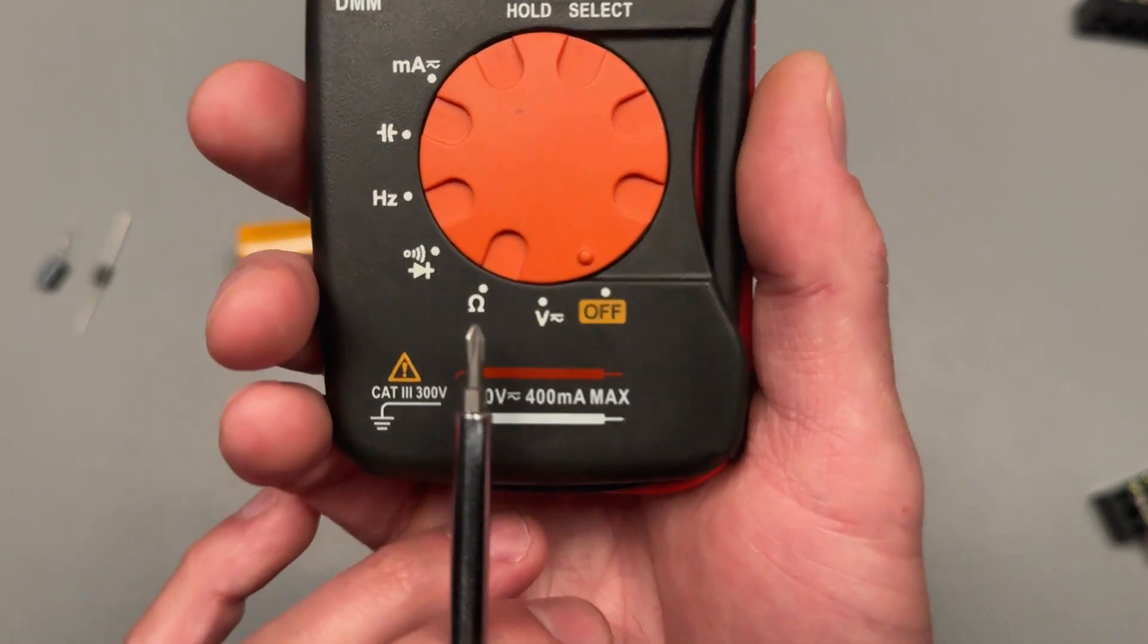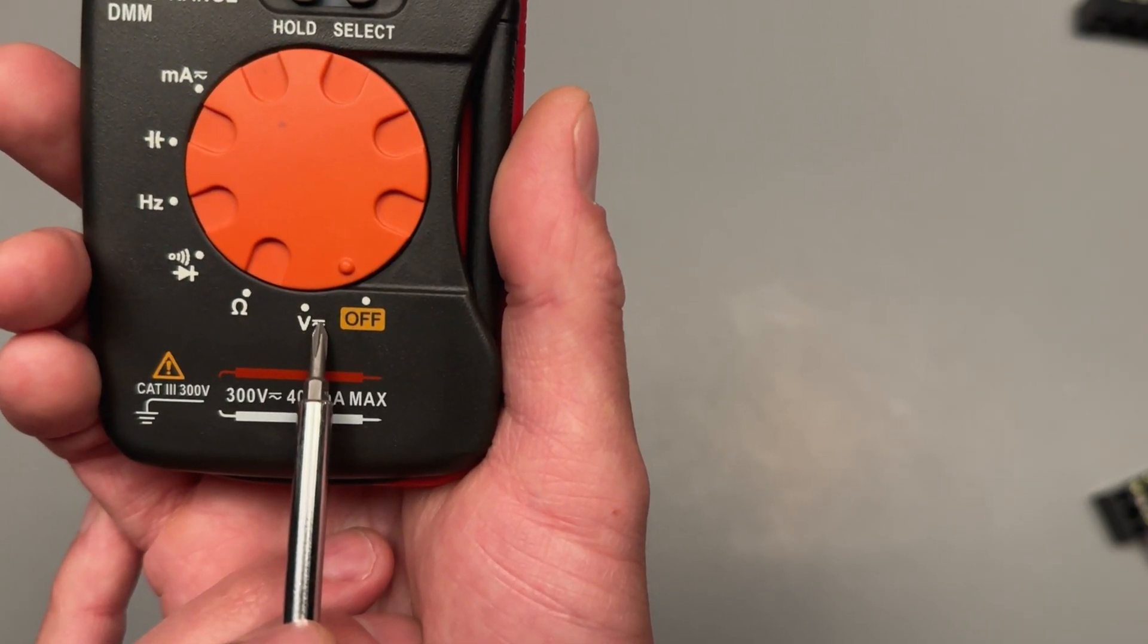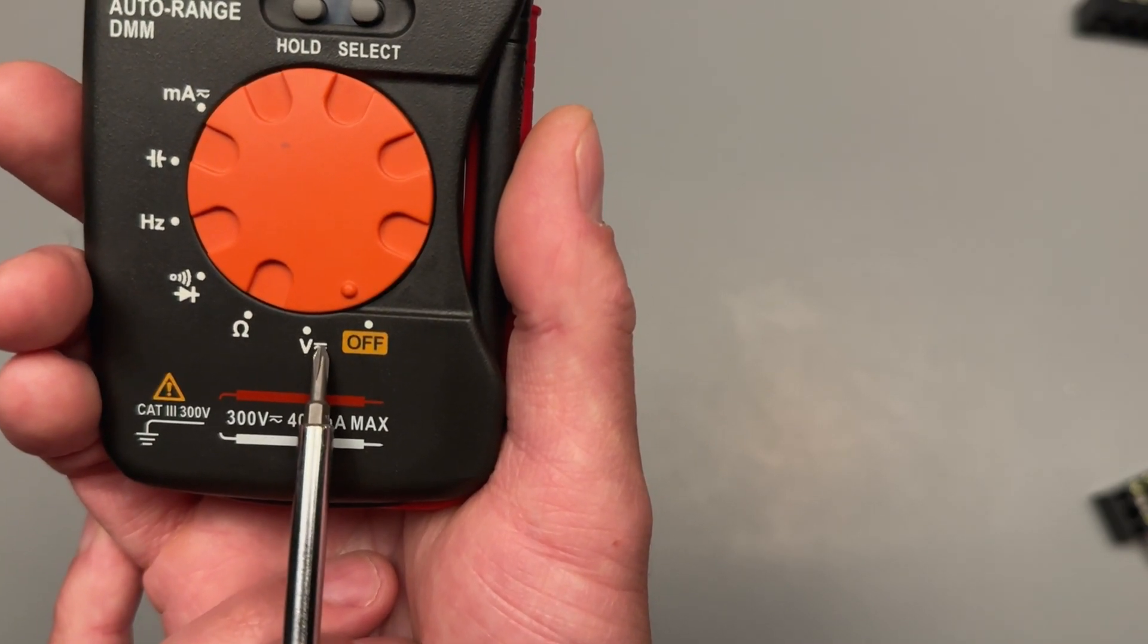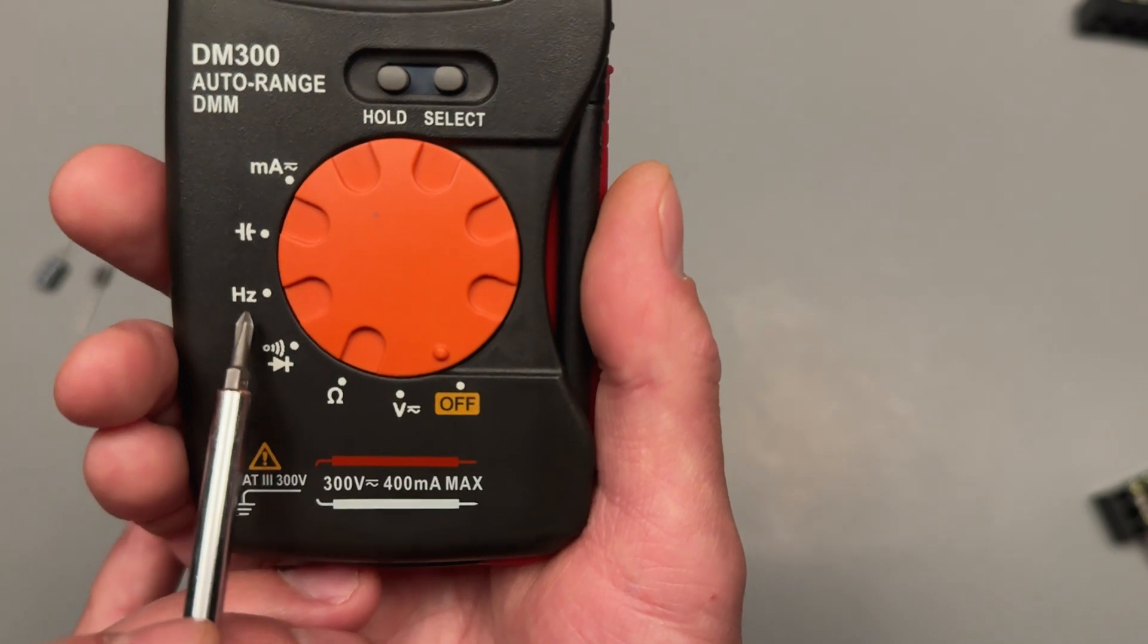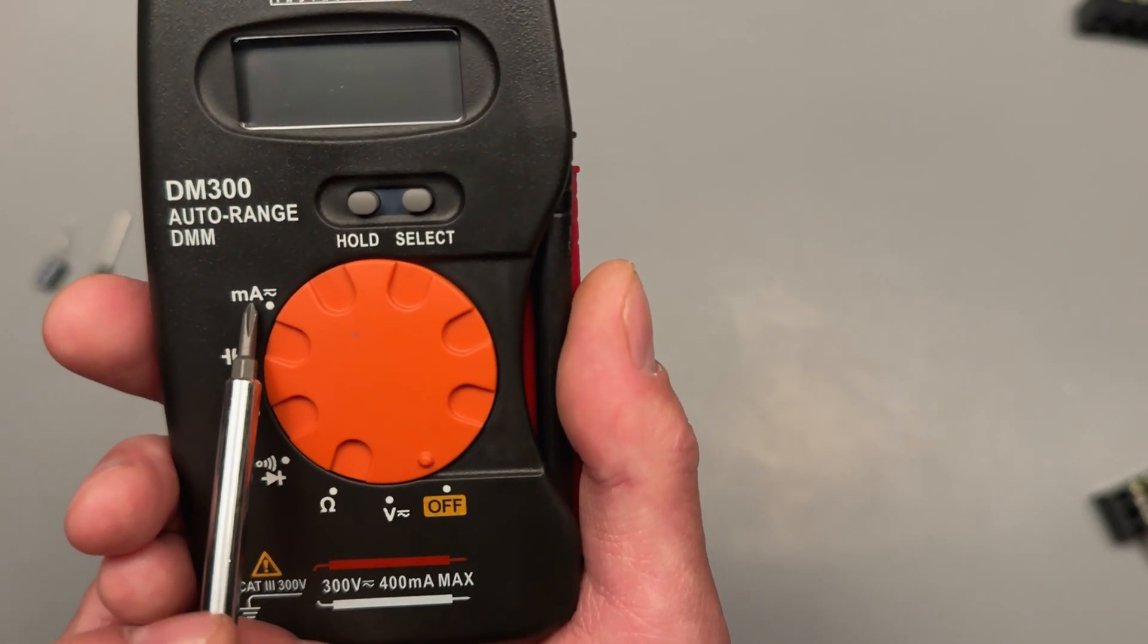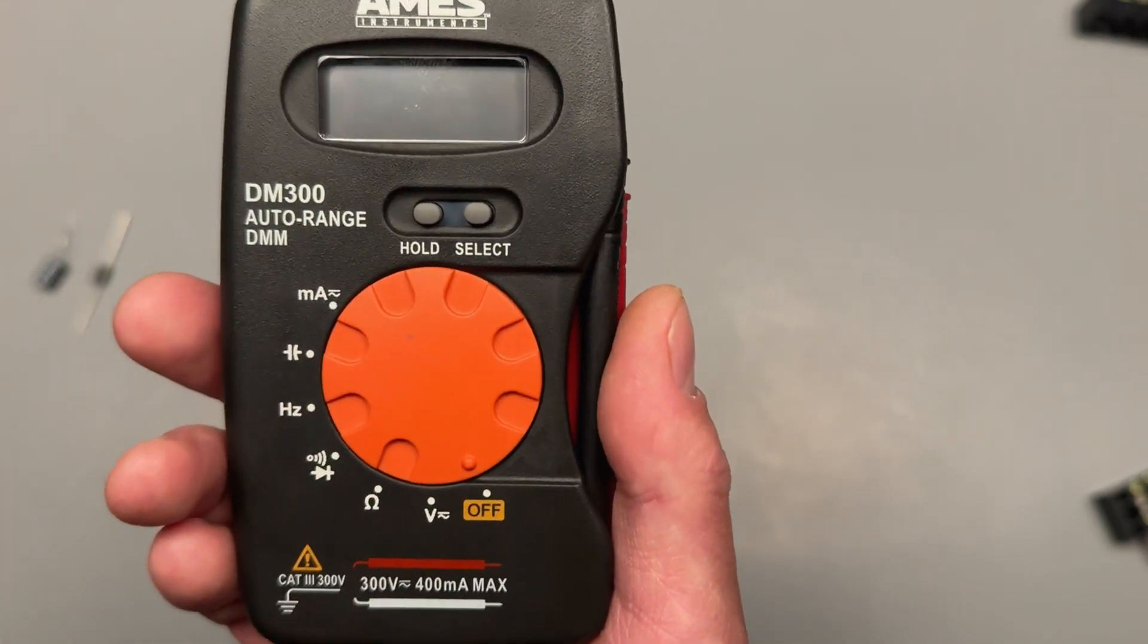Voltage, when you have a straight and a squiggly line like that, that's to indicate the straight line's for DC and then this little sine wave here is for AC. We have resistance, continuity and diode, hertz, capacitance, and then milliamps is also rated for AC, DC. And then we have a hold and select button.